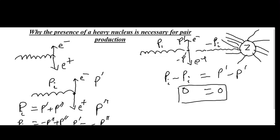Hence, for the conservation of momentum, this heavy nucleus must be present for pair production to occur.